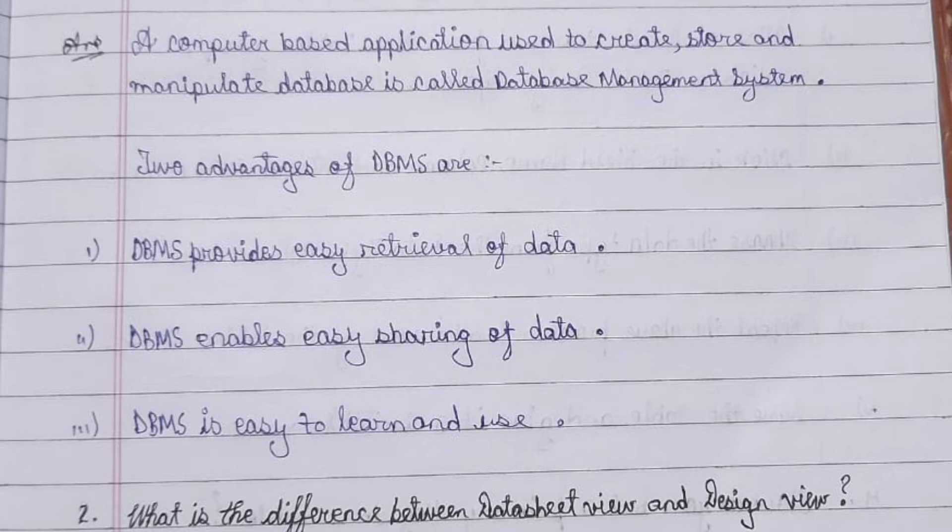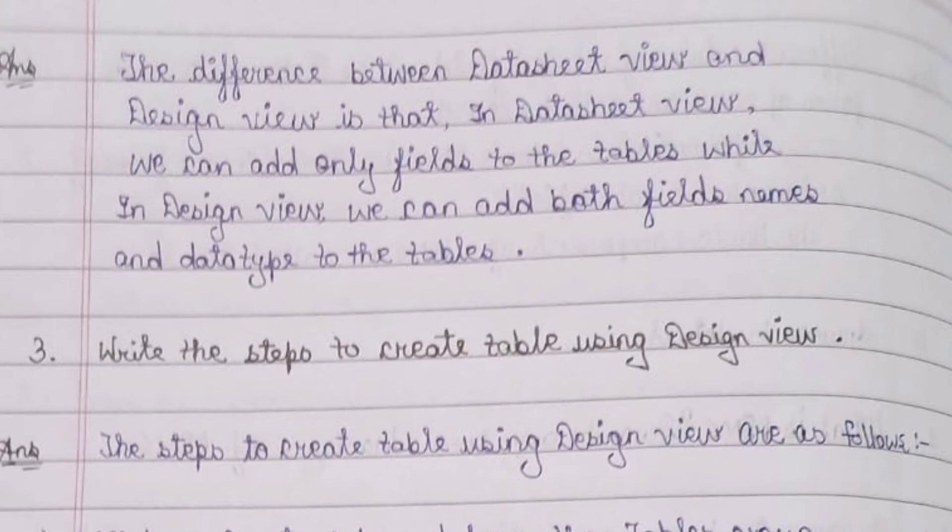Question 2: What is the difference between datasheet view and design view? Answer: The difference is that in datasheet view we can add only fields to the table, while in design view we can add both field names and data types to the table.